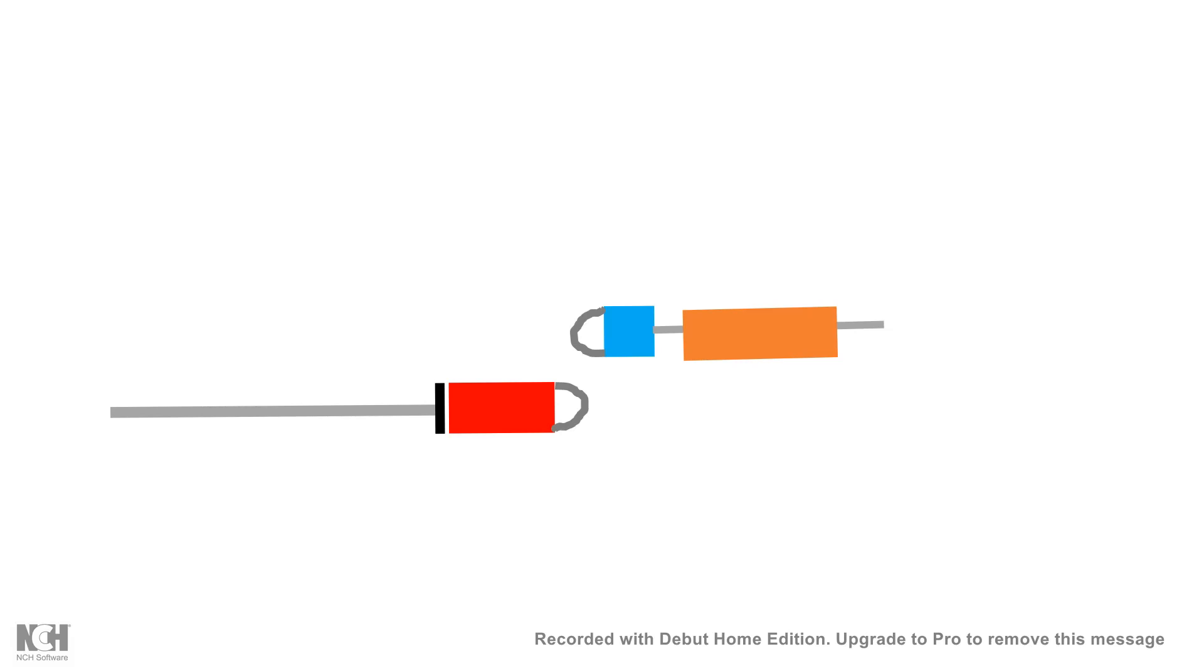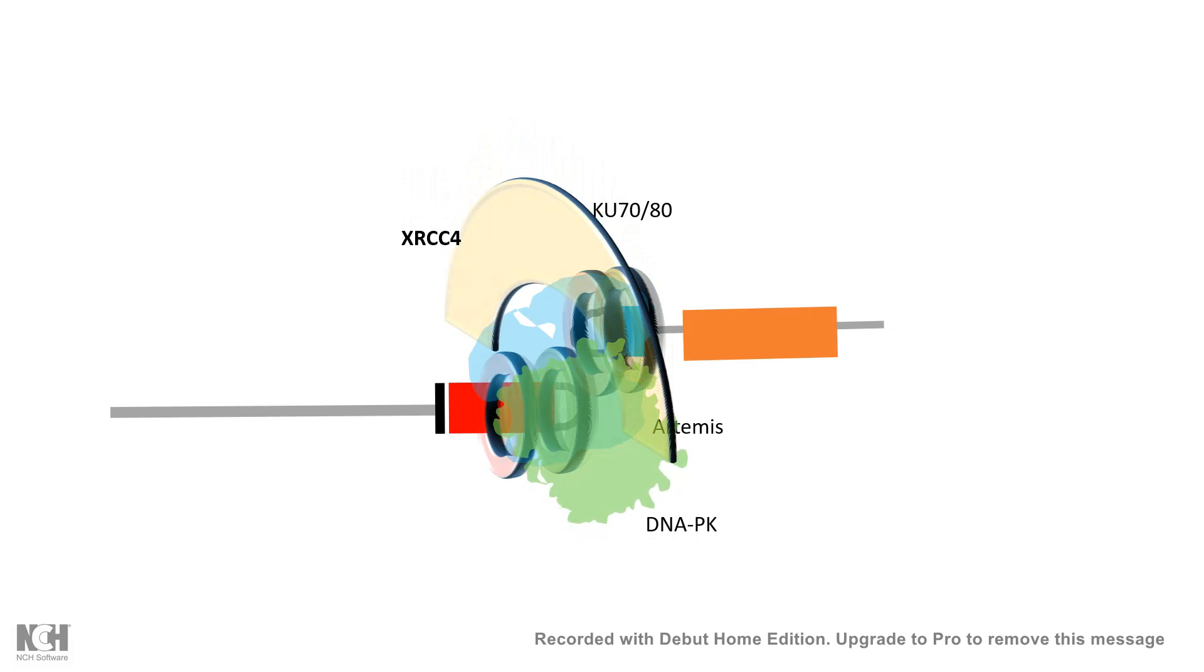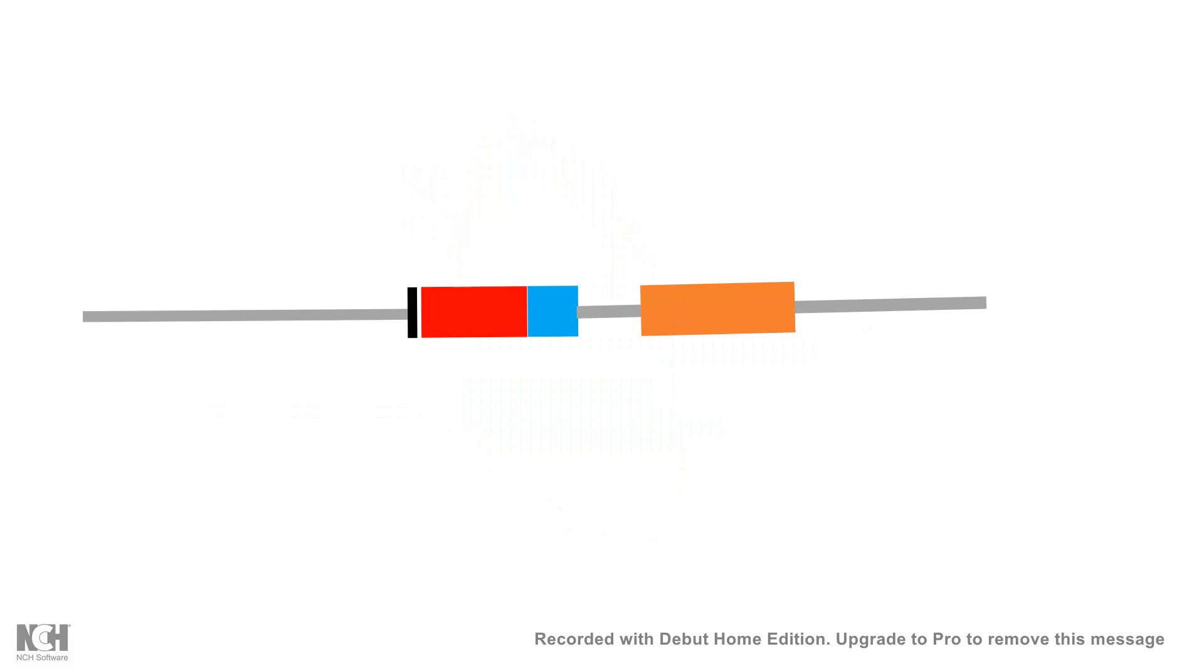When the double-stranded DNA break occurs, it's joined by the NHEJ mechanism. Ku70 or Ku80 binds to it, followed by Artemis, DNA-PKcs, and XRCC4. These NHEJ enzymes join the gene segments. mRNA is then produced and translated to form the light chain.